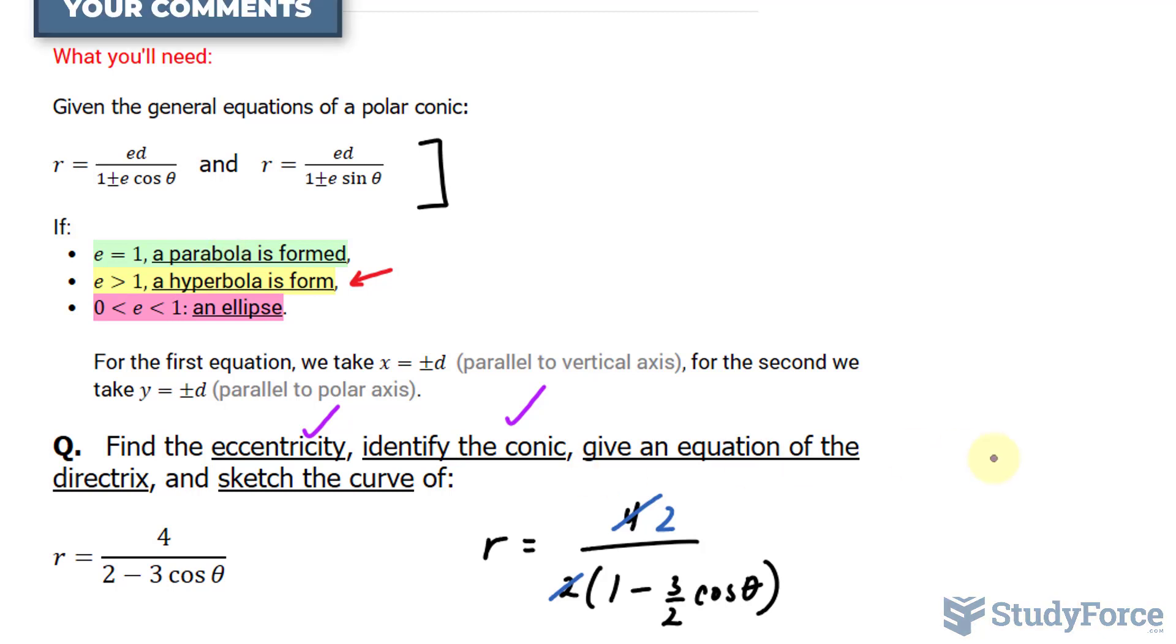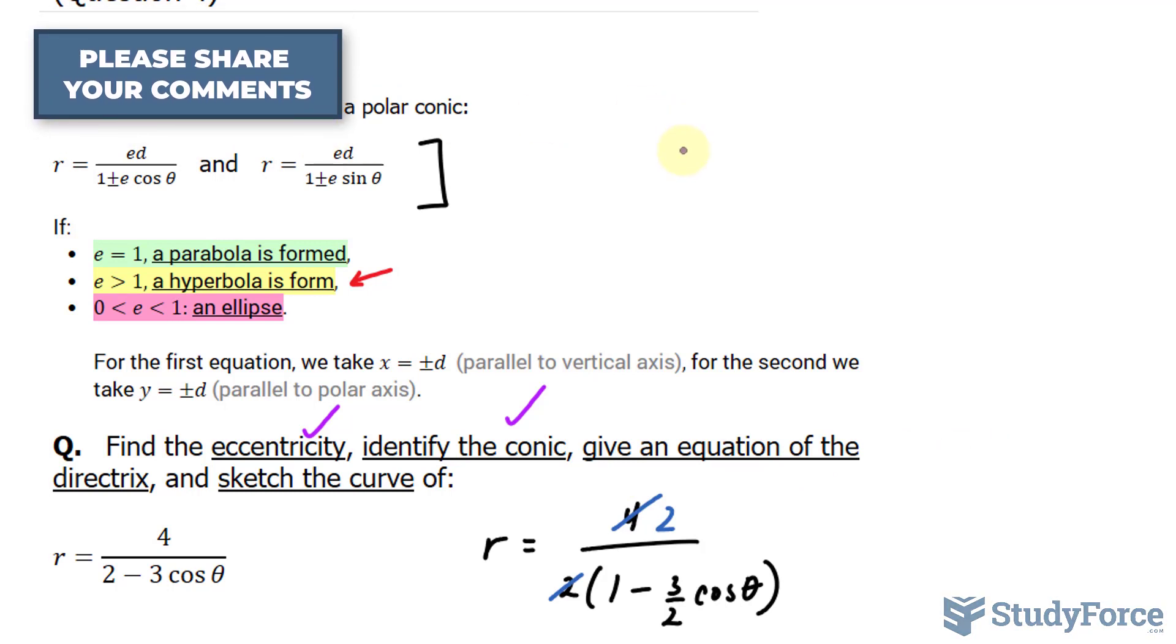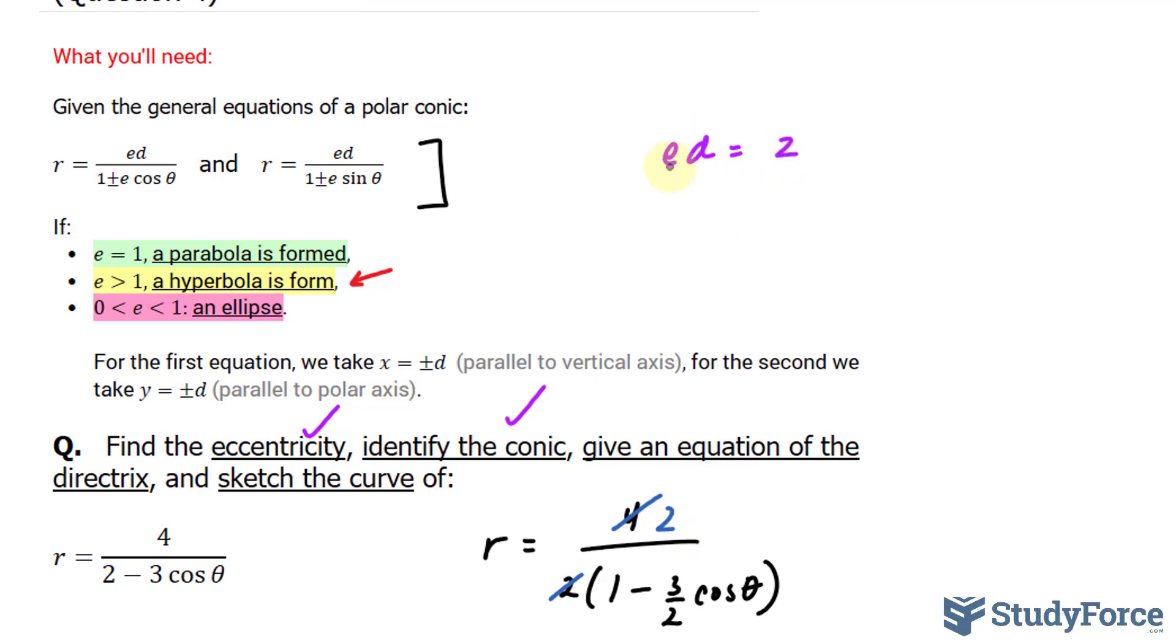So to find the equation of the directrix, I'll set e times d equal to, in our case, two. I already know what e is. It's three over two. So three over two times d equals two. Dividing both sides by three over two gives us d equals four over three.